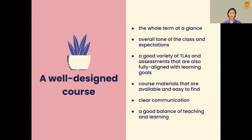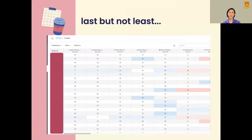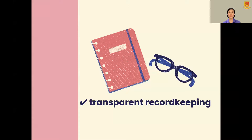Materials are available and easy to find. There's clear communication with Canvas announcements and Canvas inbox. And of course, there's a good balance of teaching and learning because teachers and students alike are both active in the course. Look at this gradebook — with all the assignments and activities created inside, you can see that grades are easily tracked and recorded, making for transparent record keeping. The whole point is not just to show the grades, but to let students know how to regulate themselves — awareness of one's class standing helps them direct their pace and overall manage themselves better.